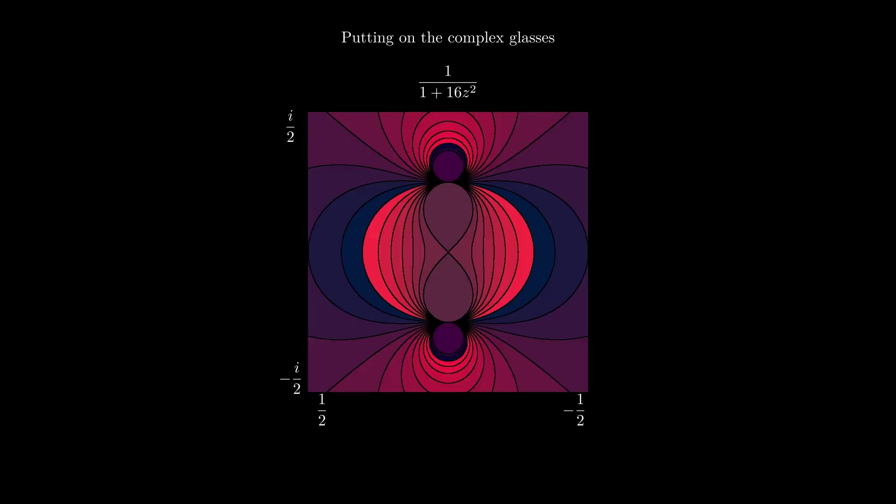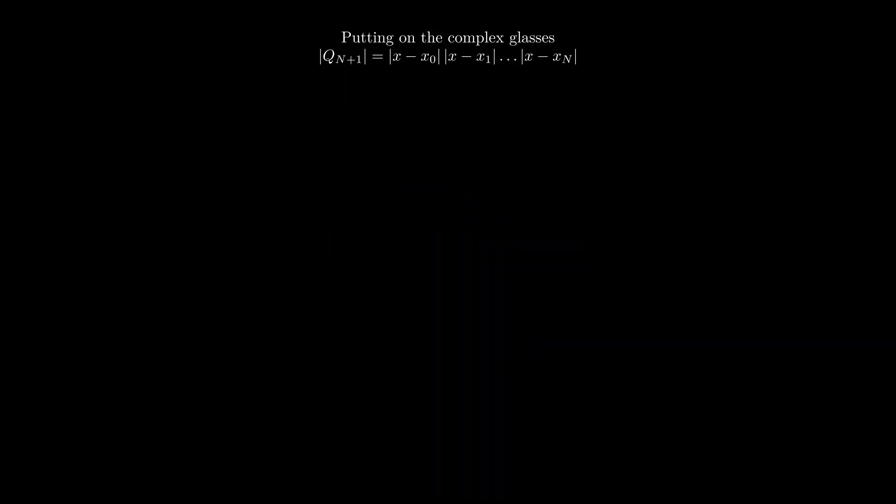First, we look at a contour map of the real component of the Runge function in the complex plane. We note that there are poles at plus and minus i over 4. The Runge function happens to be analytic in the strip between plus and minus i over 4. Next, we recall the upper bound on the value of the monic polynomial created from the nodes. We take the logarithm and add a 1 over n scale factor. We note that this is the form of a potential function satisfying the 2D Laplace equation, like an array of charges in a two-dimensional universe.